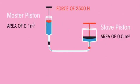Now it's your turn to try an example. A force of 2,500 newtons is applied to a master piston with a surface area of 0.1 meter squared. Calculate the force generated in the slave piston with a surface area of 0.5 meter squared. Pause the video to work it out.